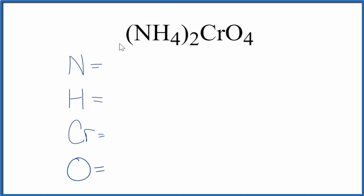To count the atoms, the 2 applies to everything in parentheses. So 2 times 1 nitrogen gives us 2 nitrogens, and 2 times 4 gives us 8 hydrogen atoms in (NH₄)₂CrO₄.